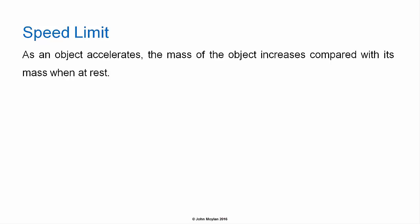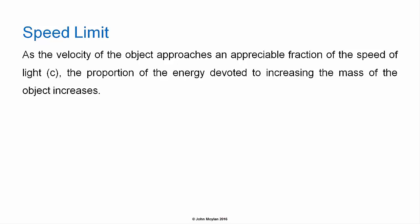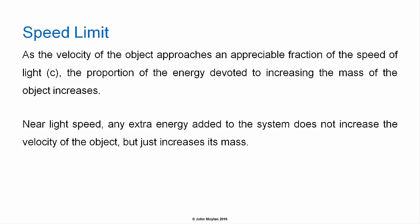As an object accelerates, the mass of the object increases compared with its mass when at rest. This results in the energy put into accelerating the object becoming progressively less effective at increasing the object's velocity. As the velocity of the object increases, the proportion of energy devoted to increasing the mass of the object increases. Near the speed of light, any extra energy added to the system does not increase the velocity of the object but only increases its mass.